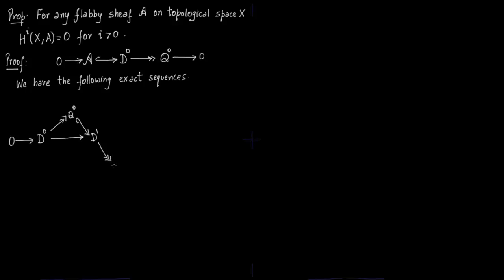The next step is that you form Q1, a surjective map. This Q1 is nothing but D1 over image of D0. Then Q1 injects into sheave of discontinuous sections D2. D2 is the sheave of discontinuous sections of Q0.